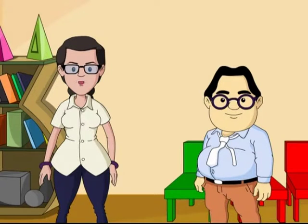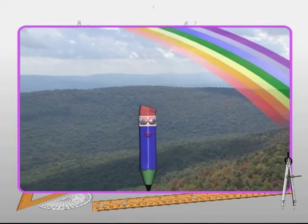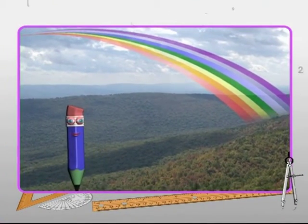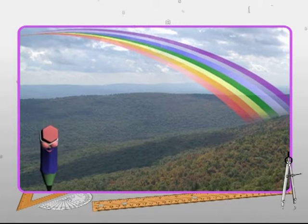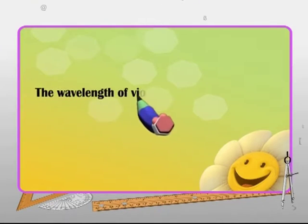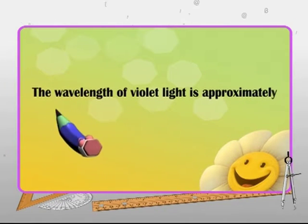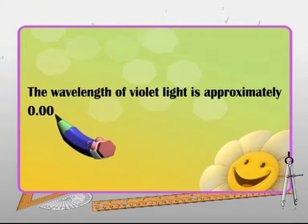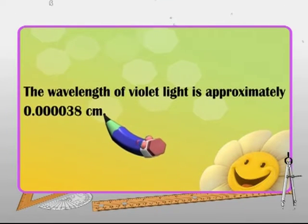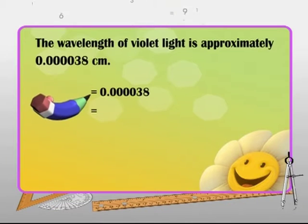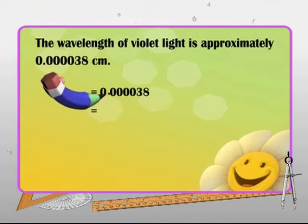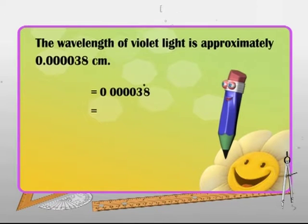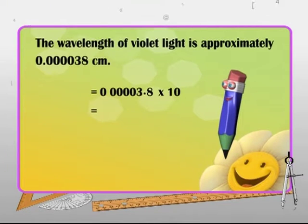Let's consider another example involving an extremely small number. The wavelength of violet light is approximately equal to 0.00038 cm. To express it in standard form, move the decimal five places to the right. So we obtain the value 3.8 into 10 raised to the power of minus 5 centimeters.